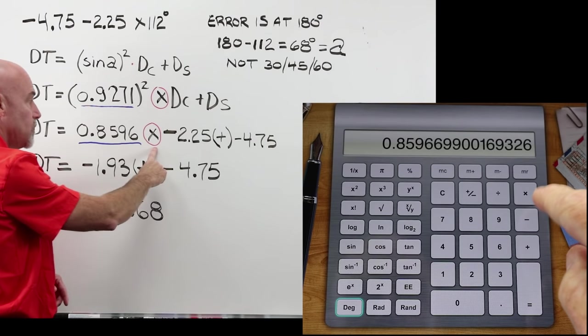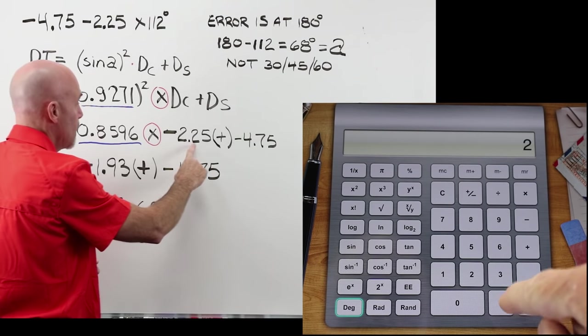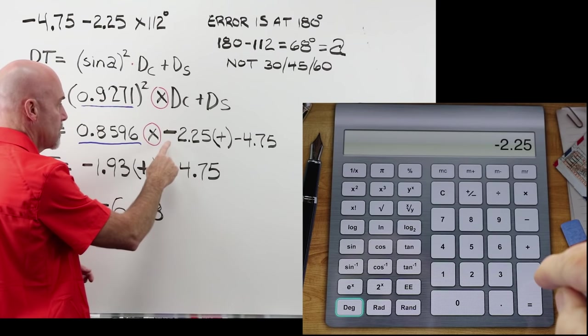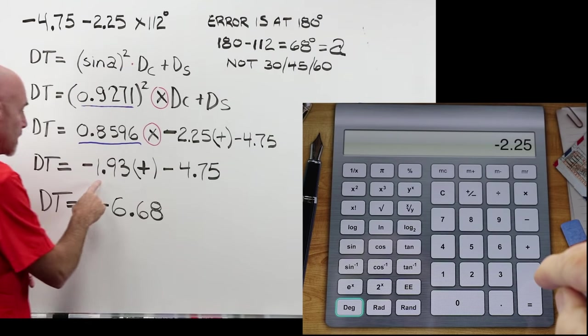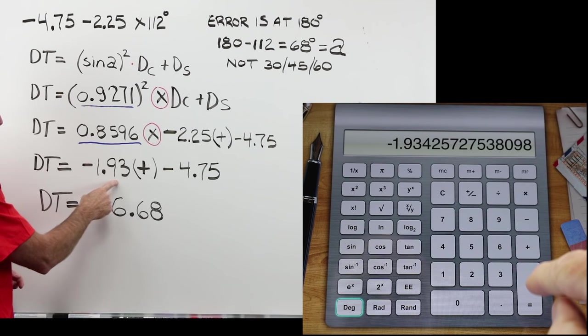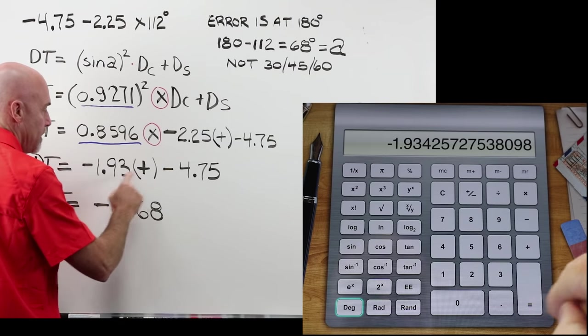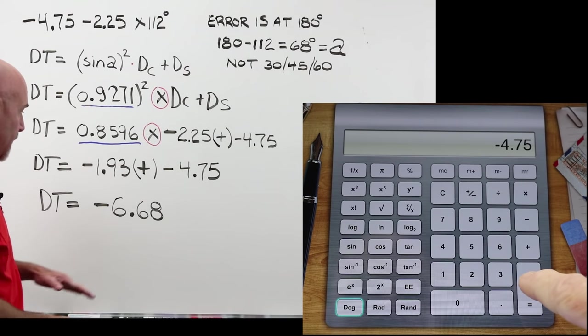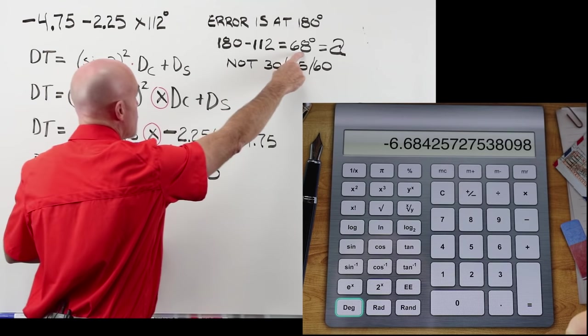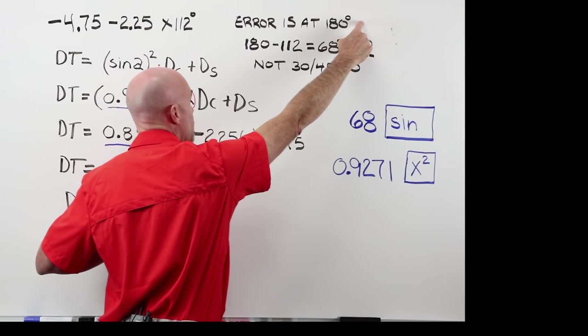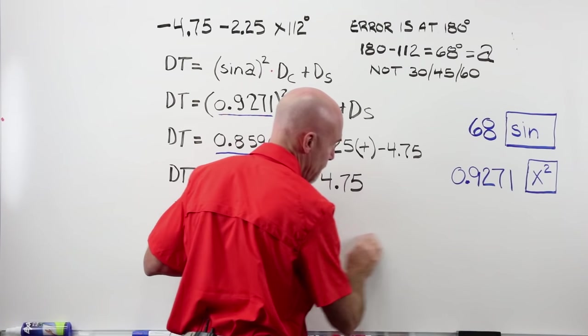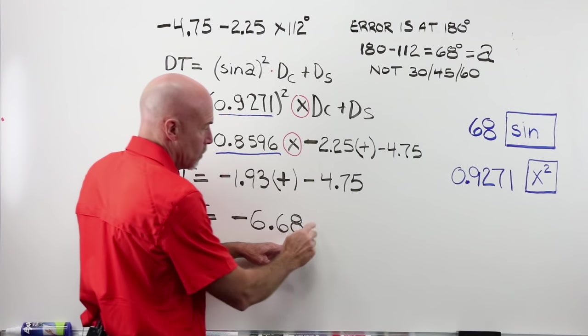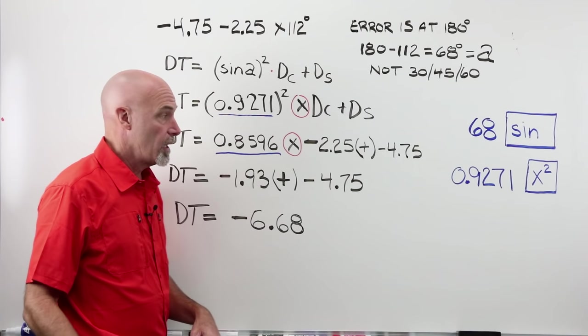Now we're going to take this number, hit your multiplication x times minus 2.25, which usually is 2.25, and then you hit your plus minus button, so that appears. And you're going to end up here. You're going to end up at minus 1.93. Now add that to your minus 4.75, which is your sphere, and you're going to end up at minus 6.68. 68 degrees away from 112, at 180 degrees, the power in the meridian that we need is going to be minus 6.68, and when we get into prism, you'll understand why we need this, and where this comes into play in Prentice's formula in other applications.